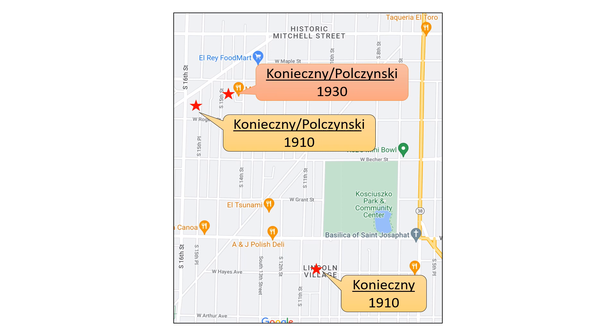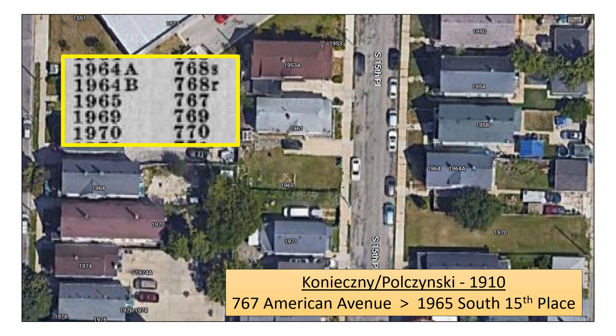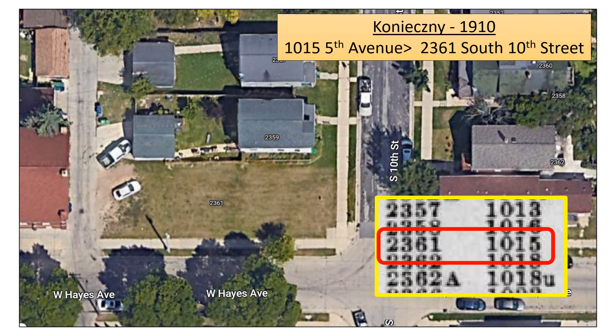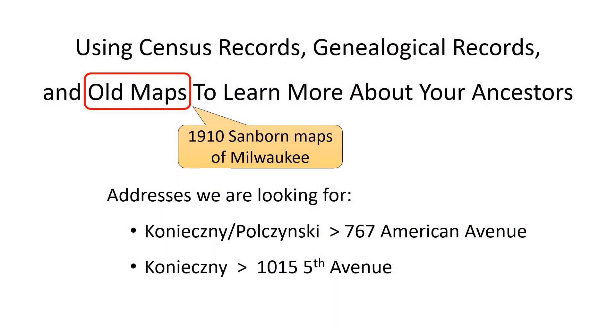Back on Google Map, here is the Konieczny-Pulchinsky clan territory of the early 1900s in the old Polish district of Milwaukee. Zooming in on the Google Map to 1965 South 15th Place and switching to the satellite image, we see that the Konieczny-Pulchinsky house of 1910 has been torn down along with its neighbor. Switching to the 1910 Konieczny house at 2361 South 10th Street, it appears that this house has been torn down too. So it looks like we need to go back to the 1910 Sanborn maps to find these houses.